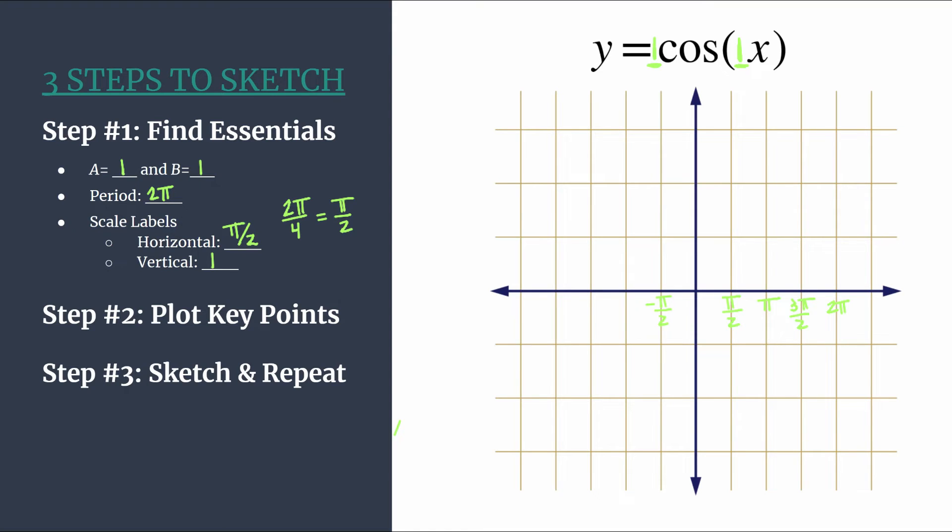And we can go ahead and label our negative side of the horizontal axis. Same values, just negative. And if you wanted to keep going, of course you could, but we'll just leave enough room here to sketch two cycles. And labeling the vertical axis is even easier. We are simply counting by ones. So now that we have that, we're ready to move on to step two, where we will plot our key points.